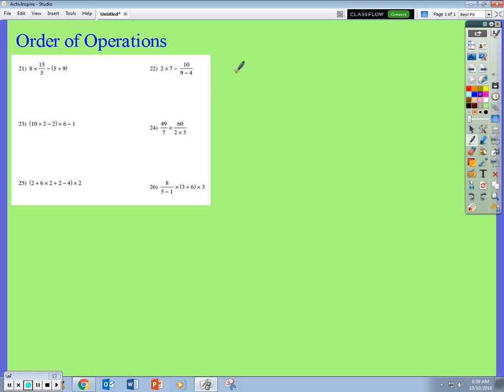I'm just going to rewrite them. Let's take a look at number 21 here first. So you have 8 times 15 divided by 5 minus, in parentheses, 5 times 9.